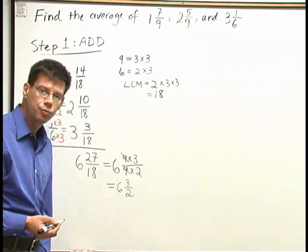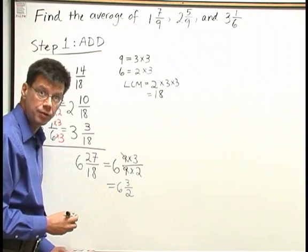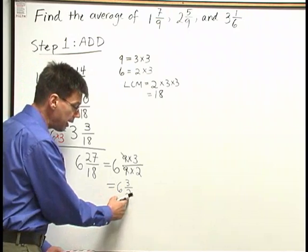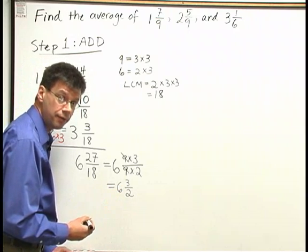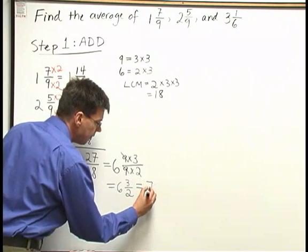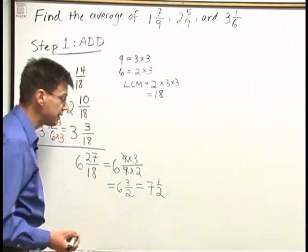The fractional part is reduced, but it's also more than one whole. So I want to rewrite my mixed number here. Three halves is one and a half. So the one whole, I add to the six to get seven. And then I have one half more, seven and a half.